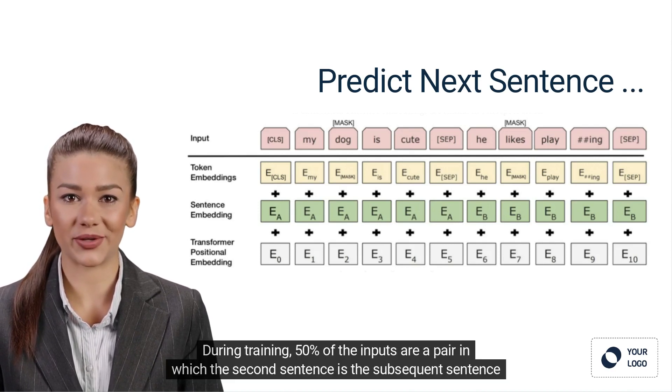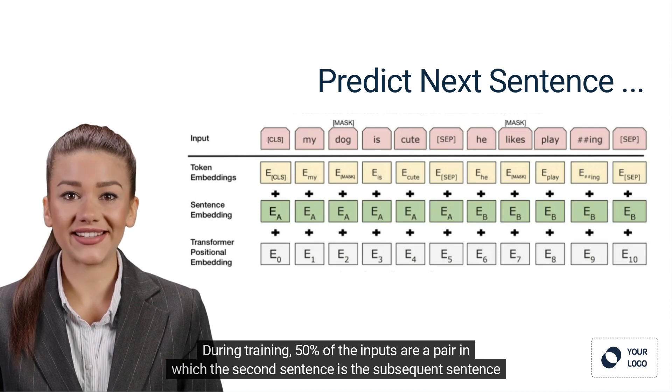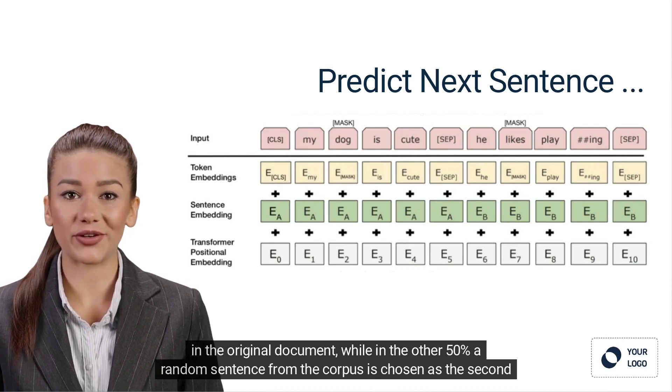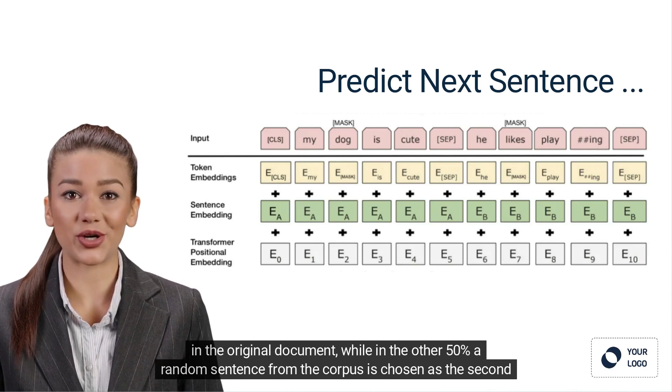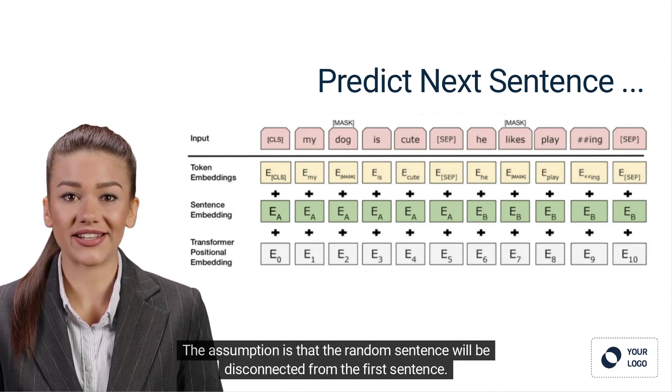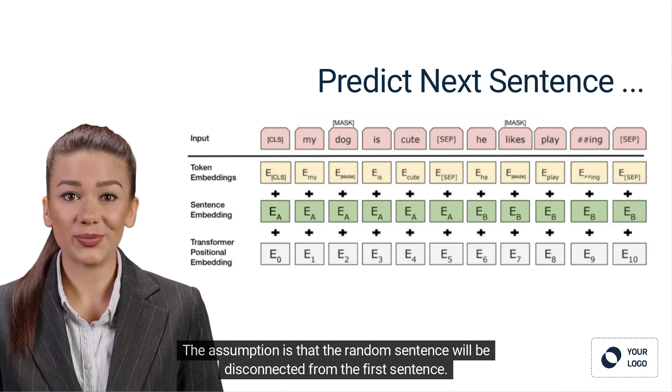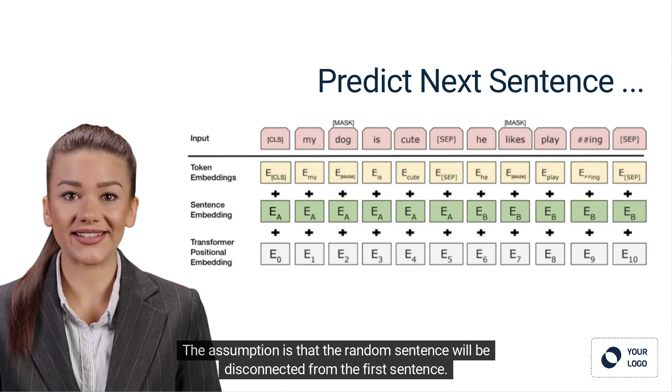50% of the inputs are a pair in which the second sentence is the subsequent sentence in the original document, while in the other 50% a random sentence from the corpus is chosen as the second sentence. The assumption is that the random sentence will be disconnected from the first sentence.